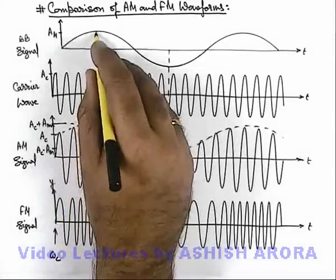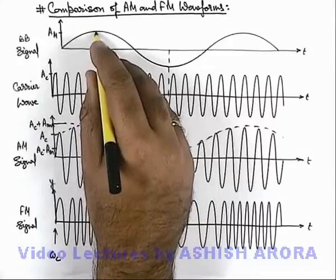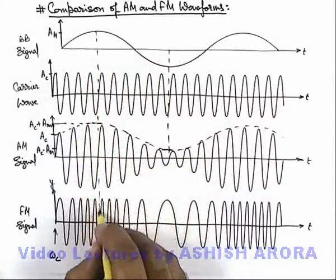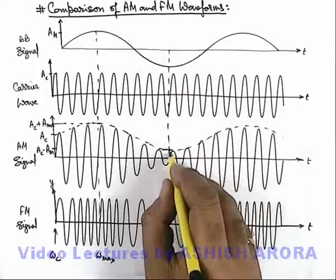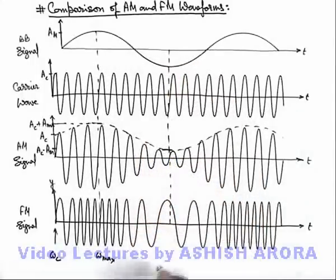But when the displacement of baseband signal is maximum, here you can see, the frequency becomes maximum. This is omega max. And when the displacement of amplitude modulated signal is minimum, here the frequency is omega min.